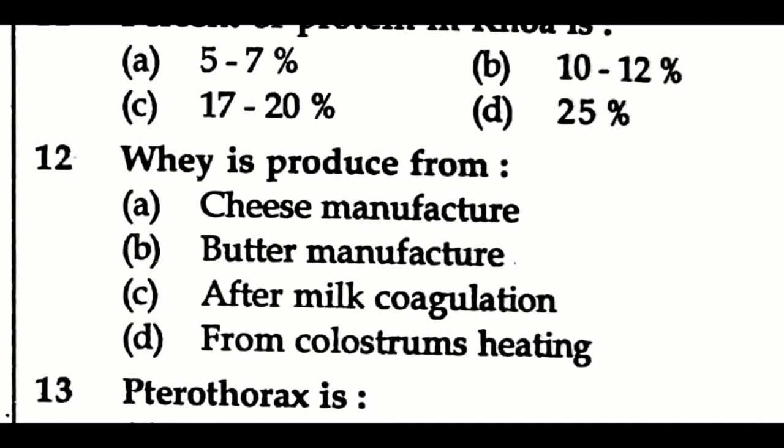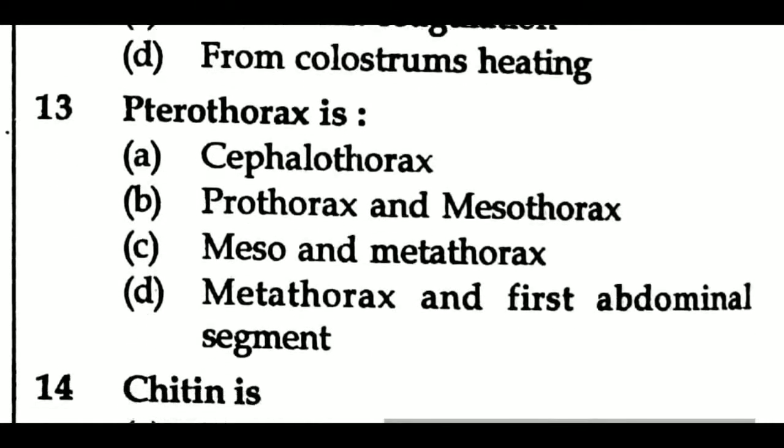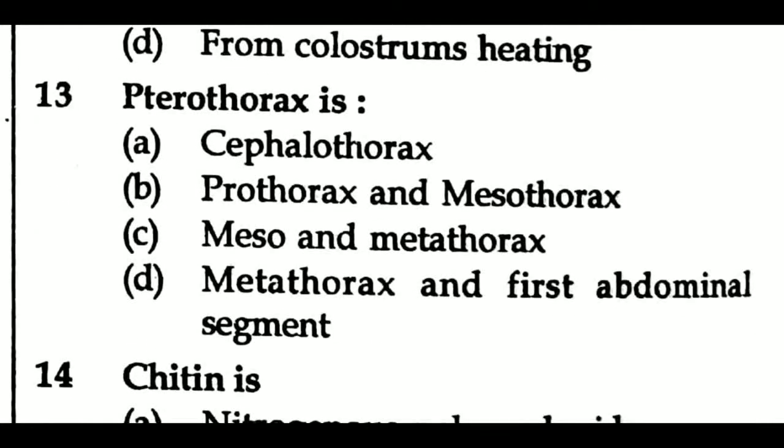Question 12: Whey is produced from — Option A: cheese manufacture, Option B: butter manufacture, Option C: after milk coagulation, Option D: from cholesterol heating. Question 13: Pterothorax is — Option A: cephalothorax, Option B: prothorax and mesothorax, Option C: meso and metathorax, Option D: metathorax and first abdominal segment.